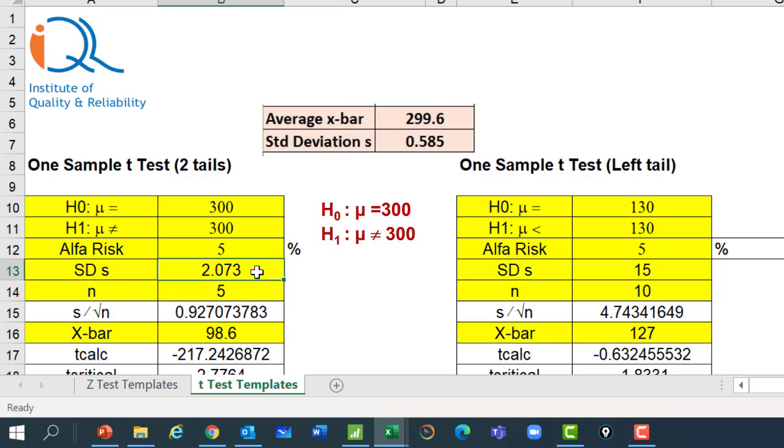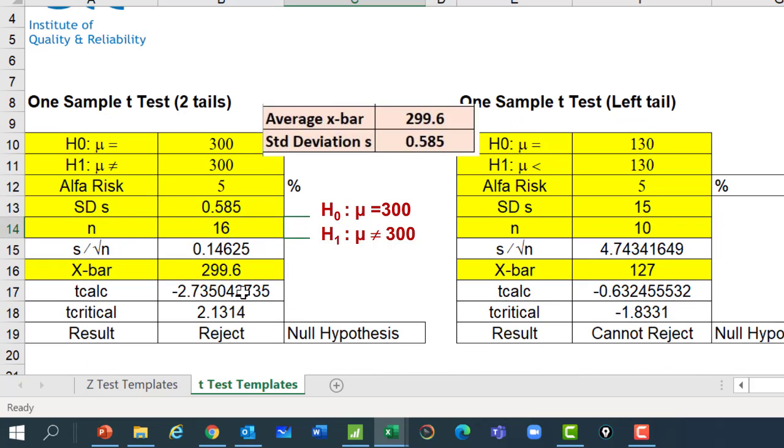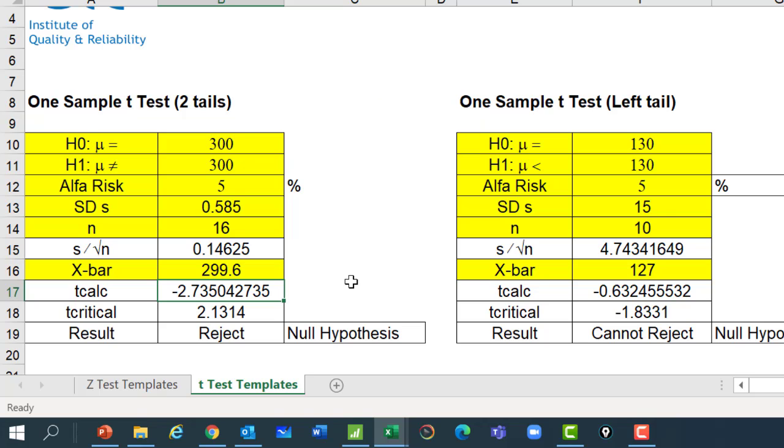Standard deviation we put as 0.585 which we have calculated on Excel. Sample size is 16. X bar we have calculated before as 299.6. And when we provide this input, the calculated value of T appears as minus 2.735 which we know is almost same as minus 2.74 which was a rounded value. Critical value of T distribution it has automatically calculated as 2.1314. And the result is reject null hypothesis.